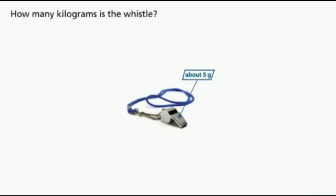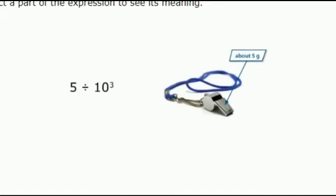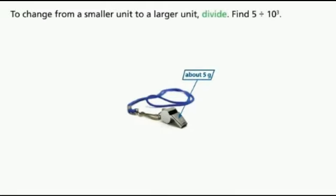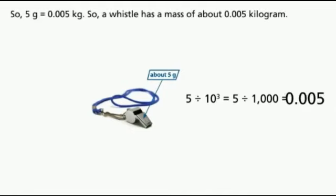How many kilograms is the whistle? A whistle has a mass of about 0.005 kg.